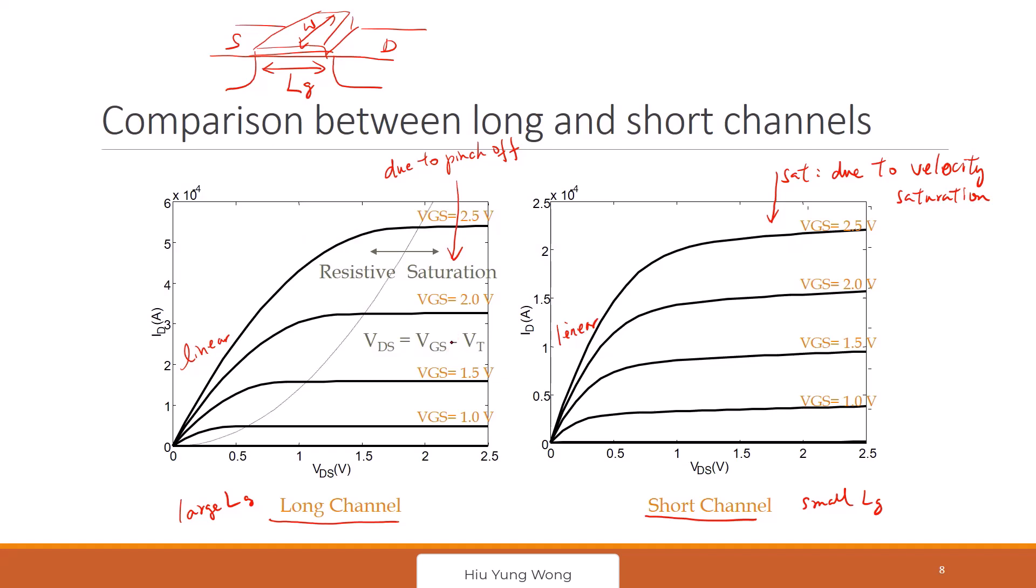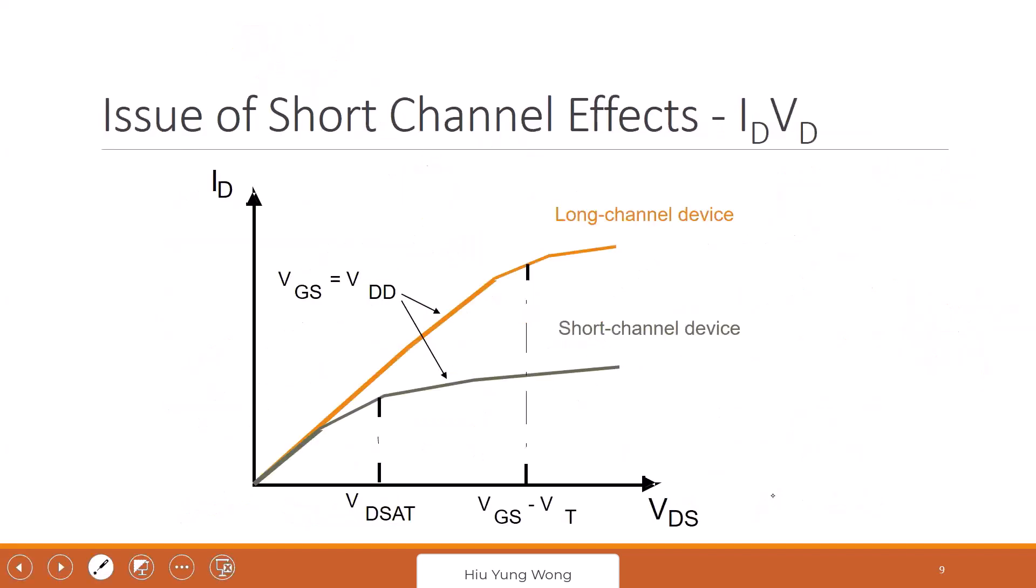Now you also see one interesting thing happened here. If you have learned about channel length modulation, you also see this has more channel length modulation, which refers to the current keep increasing when you increase VDS. And that is because of short channel. The lambda will be larger. Let's have this feeling first.